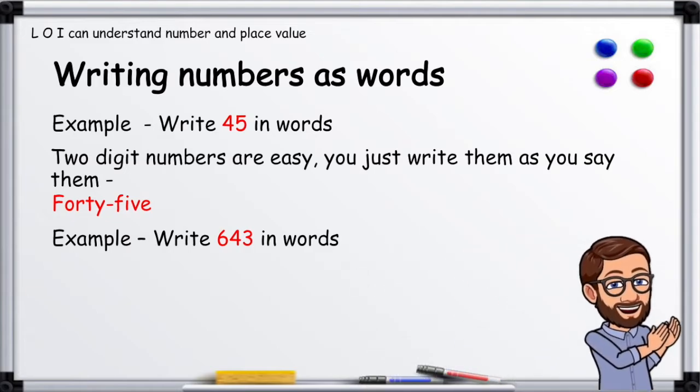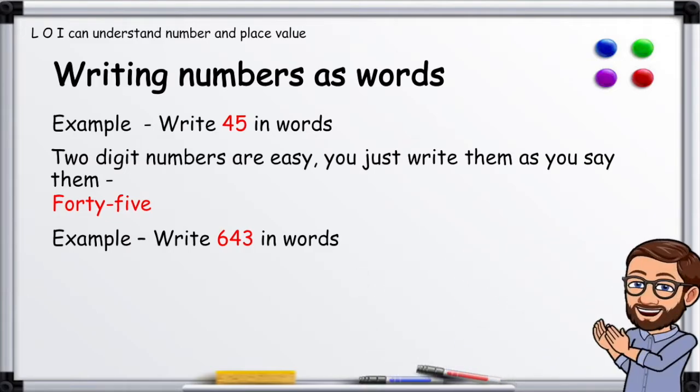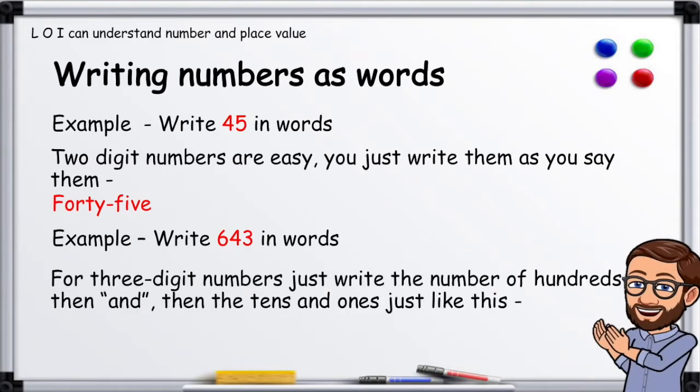Example: Write 643 in words. For three digit numbers, just write the number of hundreds, then add AND, then the tens and ones, just like this: six hundred and forty-three.